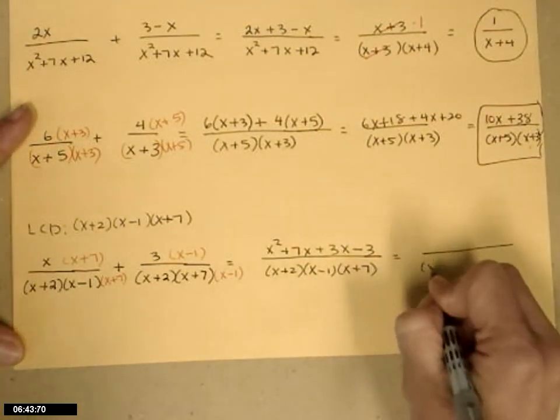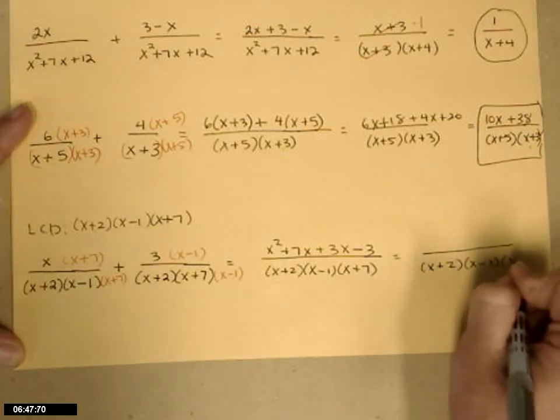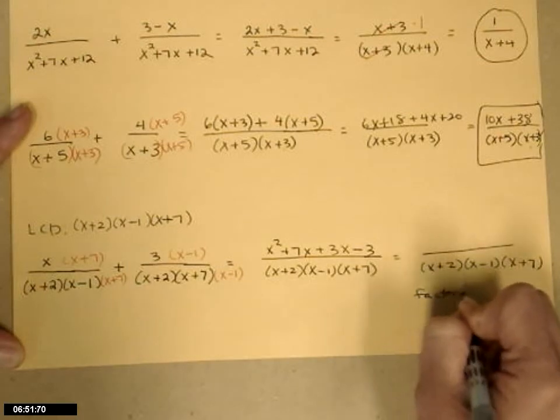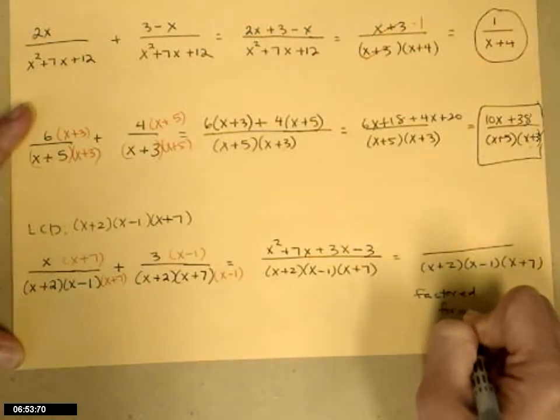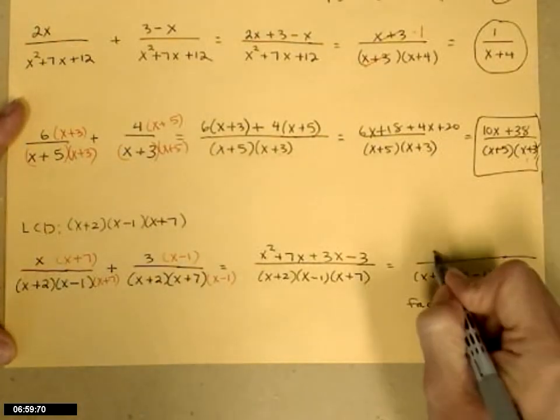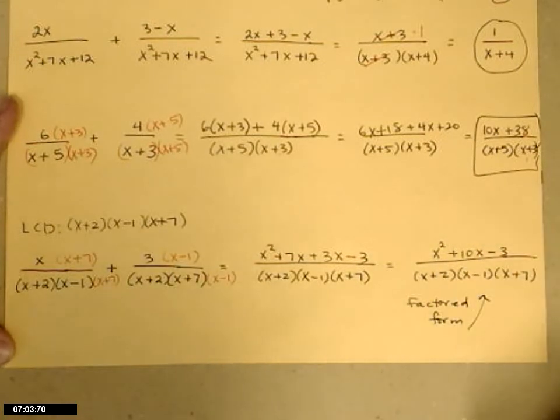Now let's tidy. Do not multiply out the bottom. The instructions are going to say leave in factored form. That means all the parentheses. And I will do the same on your midterm. And then let's tidy up the numerator: x squared plus 10x minus 3.